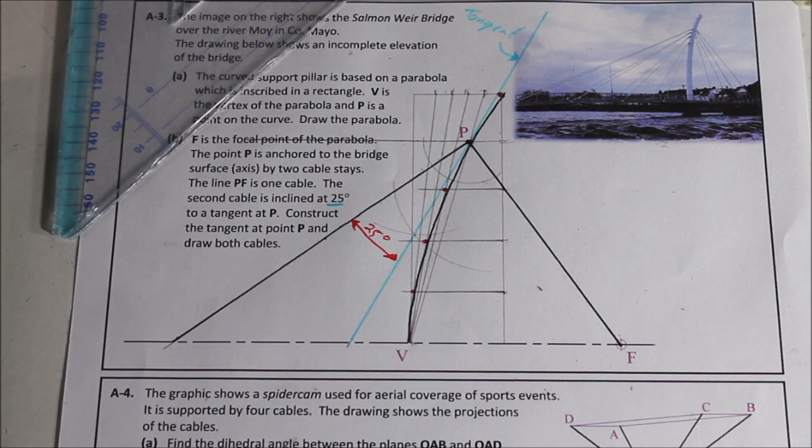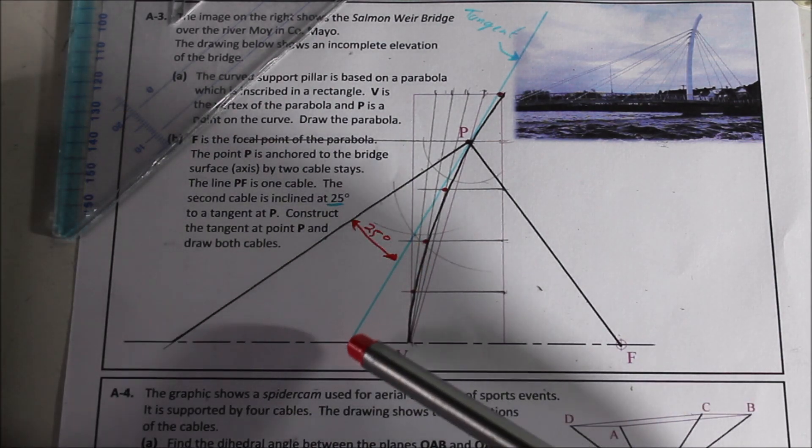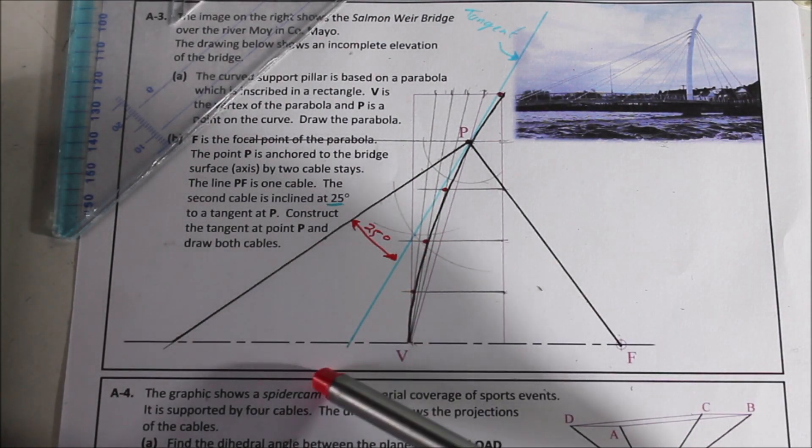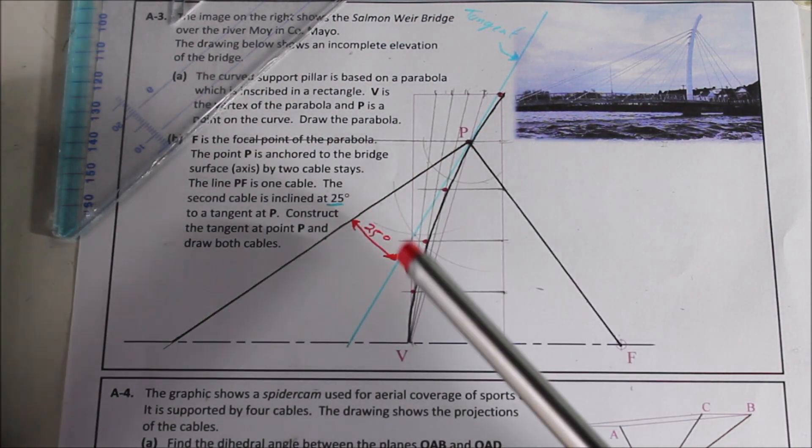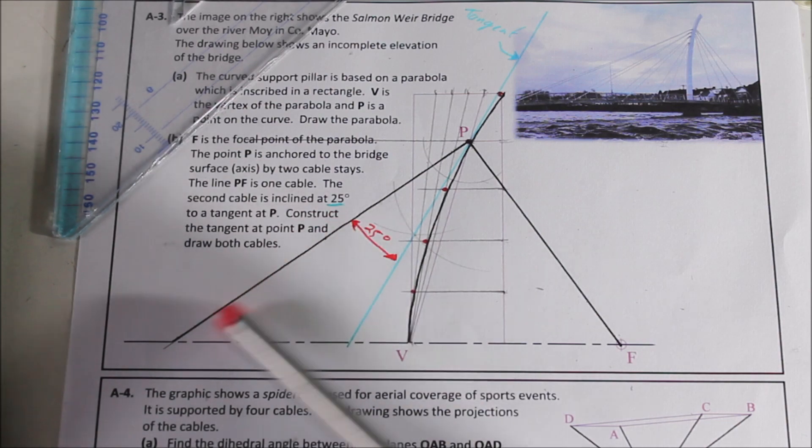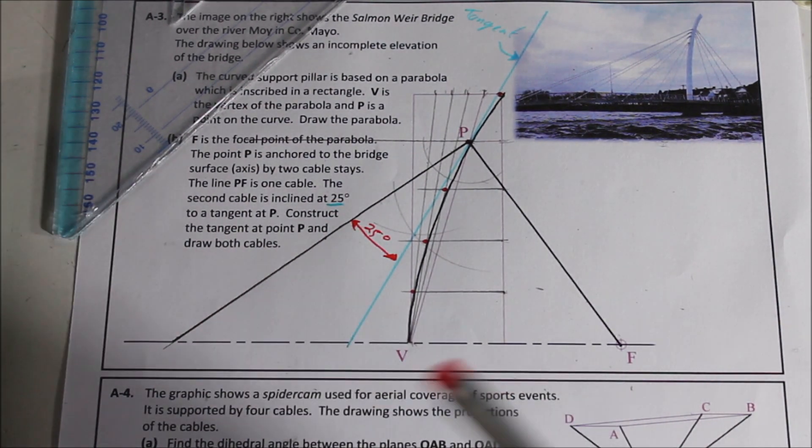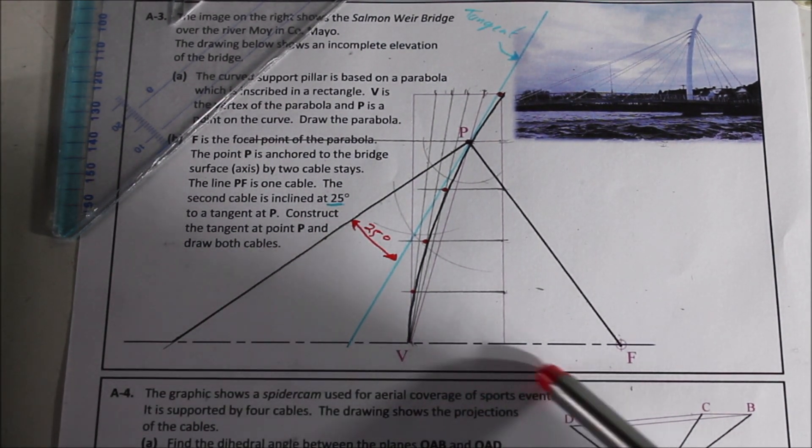So that blue line there represents our tangent then the question said the second cable is inclined 25 degrees to it. So what you need to do is as you saw there get your protractor, lie it on your tangent, put the center point at P because the cable is going to P and then you draw your 25 degree angle and keep going to hit the axis because that's where the cable is being tied off.